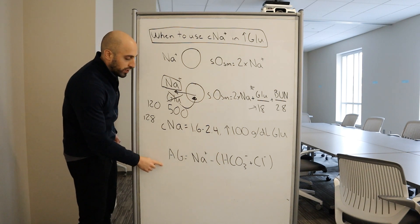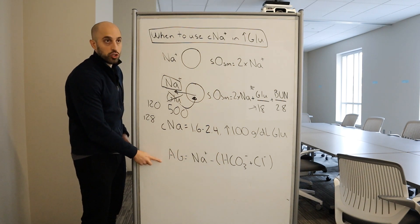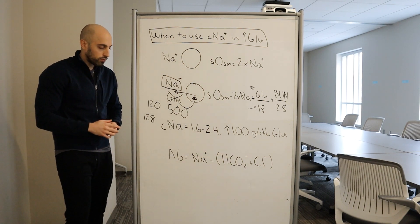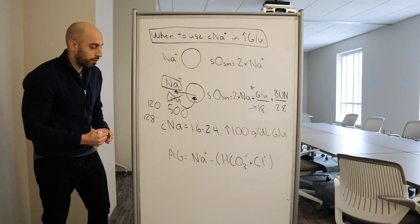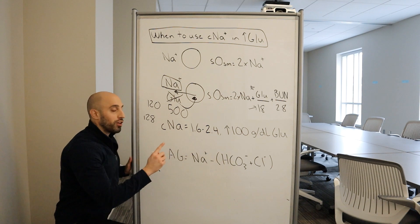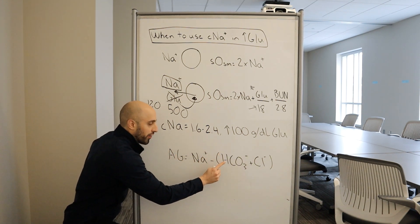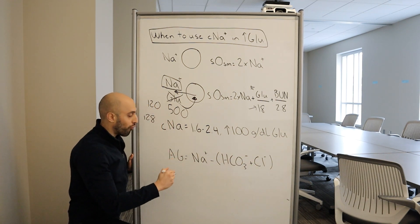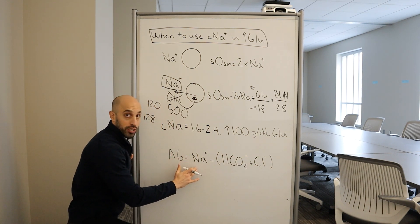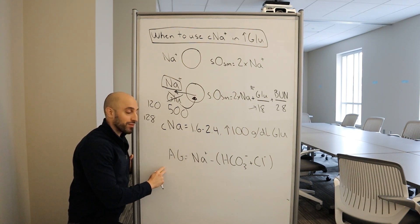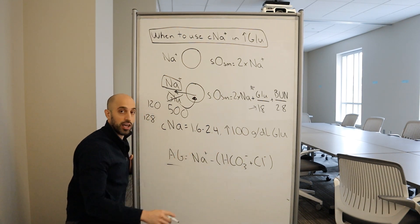Finally, when we talk about anion gap acidosis, should we use the corrected or should we use the measured? In this circumstance, remember, the dilutional effect that glucose is having on the sodium, it's also having on the bicarb and the chloride. Therefore, you should use the measured sodium, not the corrected. If you use the corrected sodium, it's going to overestimate the anion gap.